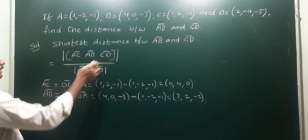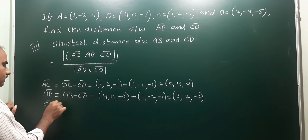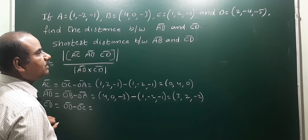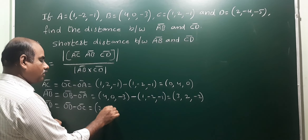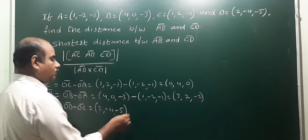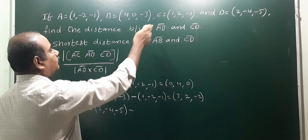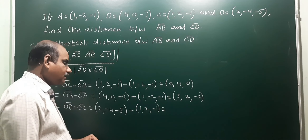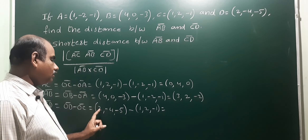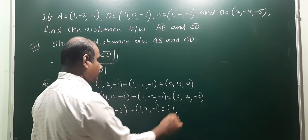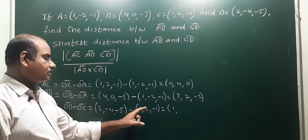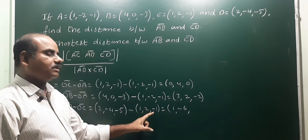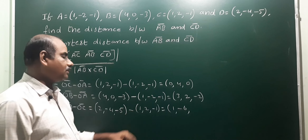CD means OD minus OC. OD is point D: (2, -4, -5), minus OC which is (1, 2, -1). Subtracting corresponding elements: 2 minus 1 = 1; -4 minus 2 = -6; -5 minus (-1) = -5 plus 1 = -4. So CD vector is (1, -6, -4).